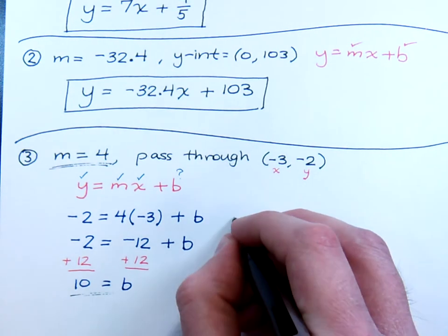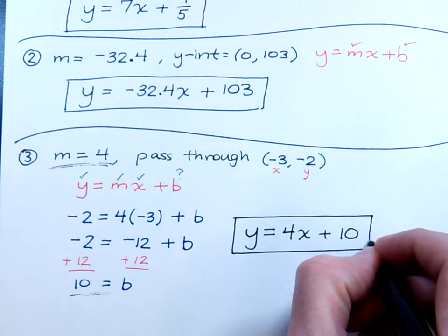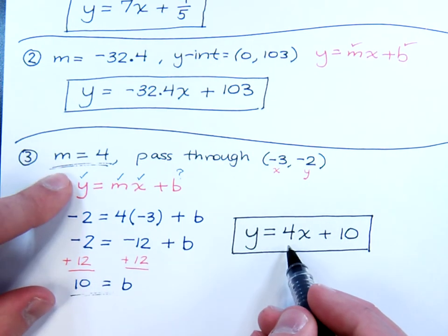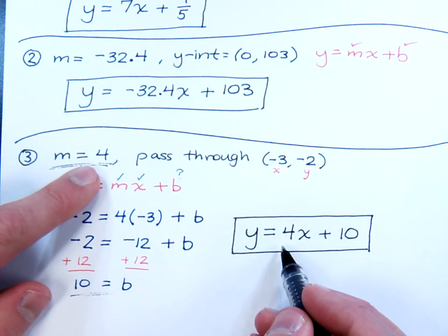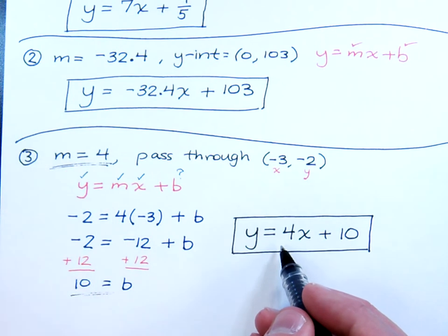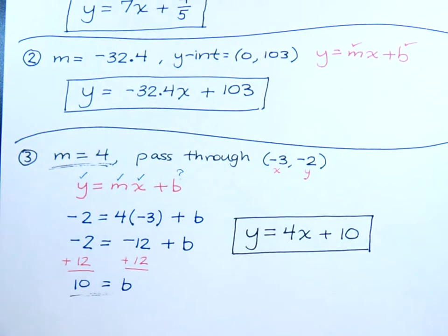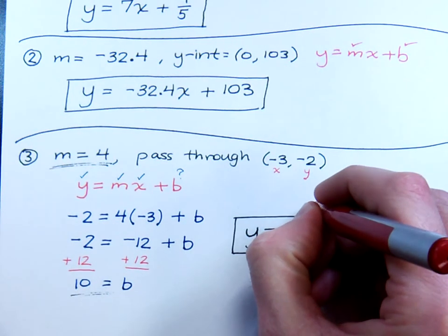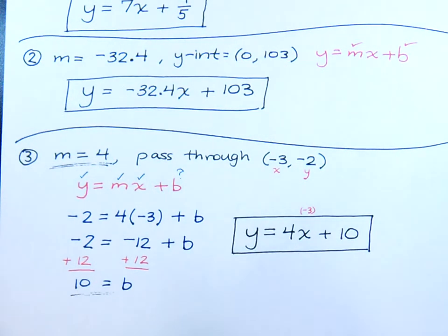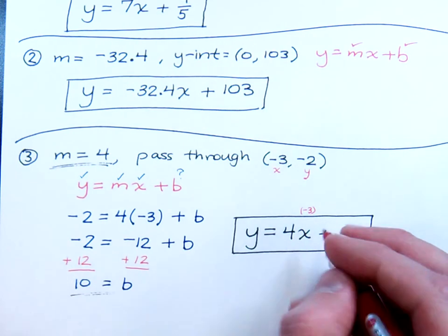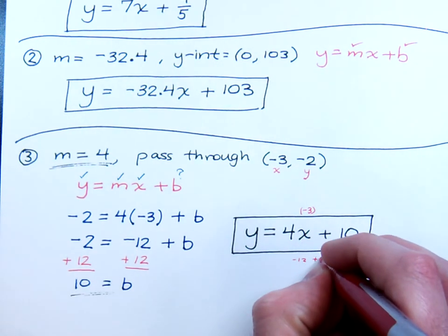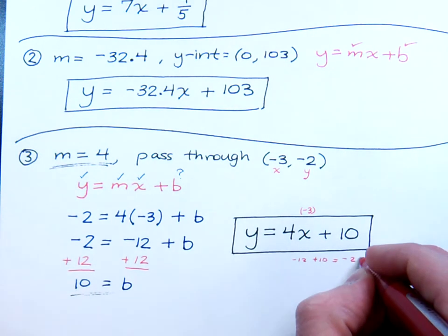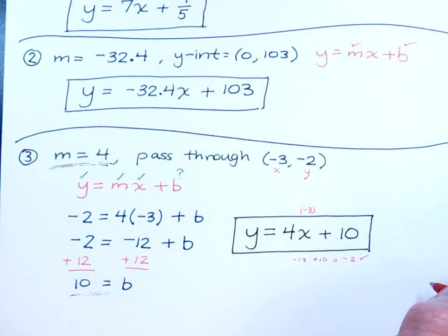Now, for all these problems, you do want to make sure that you check your work. When I look here, I think it's pretty easy to see that this equation does have a slope of 4. Is negative 3, negative 2 a solution? Well, we can check that. If I were to plug in negative 3 for the x, 4 times negative 3 is negative 12 plus 10, and that gives you the y coordinate of negative 2. So, yeah. It checks out.